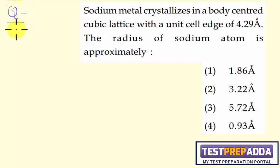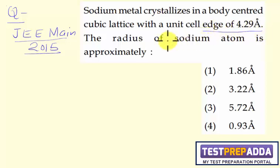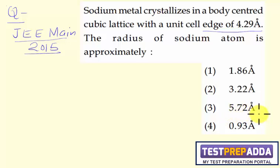This question is from JEE Main 2015, asked in an offline exam. The question says sodium metal crystallizes in a body-centered cubic lattice with a unit cell edge length of 4.29 angstroms. The radius of the sodium atom is approximately — options given are 1.86 angstrom, 3.22 angstrom, 5.72 angstrom, and 0.93 angstrom.